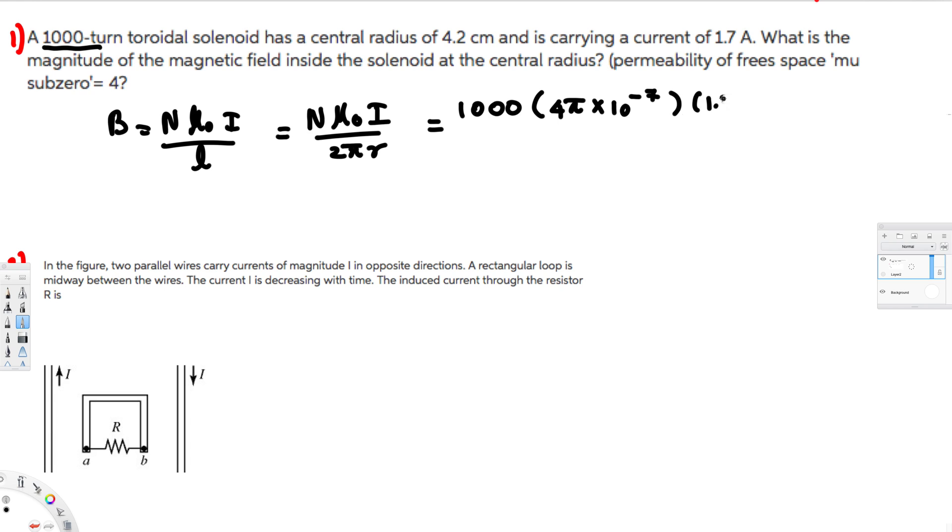1.7 amperes, and in the denominator we have 2π times the radius. The radius is given in centimeters, so to convert to meters we multiply by 10 to the power of minus 2. The final answer is 8.1 millitesla, and that's the answer.